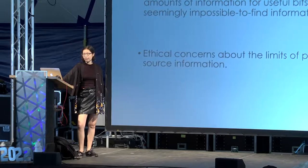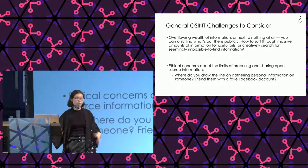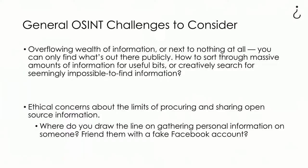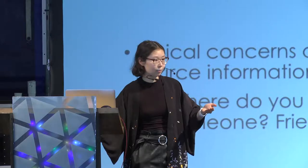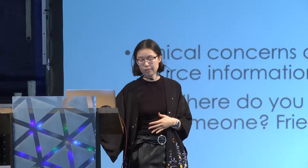Other challenges include ethical concerns: where do you draw the line on gathering personal information? For example, if you're looking into neo-Nazi groups, is it okay to create a fake profile to infiltrate them? Most people would say no, but some journalists do it. It really depends on the line you draw as a researcher, as an organization, and of course depending on the law of the country.